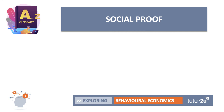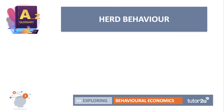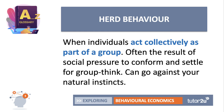Social proof takes us into the area where individual decisions and choices are often heavily influenced by the networks and social communities in which people live. Social proof happens when an individual looks to the behaviour of their peers to inform their decision making — for example, if you're a heavy drinker, you might hang around with other heavy drinkers. Herd behaviour is another form of social behaviour, where individuals act collectively as part of a group, and that can go against your natural instincts and often be irrational.